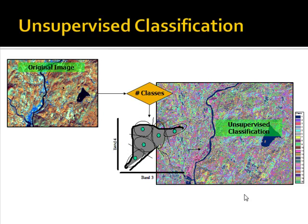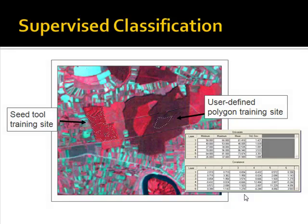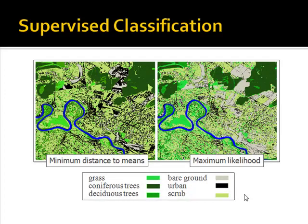The user then has the responsibility to assign those clumps to meaningful land cover classes. Supervised classification is similar in that it only relies on pixel values, but differs in that the user does not set the number of classes. Instead, the user trains the computer by digitizing polygons to identify certain land cover classes, and then the appropriate statistical algorithm assigns all pixels to those classes. Here we see results of two supervised routines using different algorithms: minimum distance to means on the left and maximum likelihood on the right.